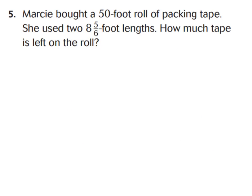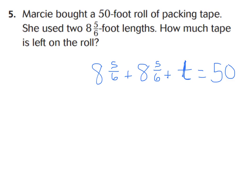Let's look at question number five. It says: Marcy bought a fifty-foot roll of packing tape. She used two lengths of eight and five-sixths feet each. How much tape is left on the roll? Let's write our equation: eight and five-sixths plus eight and five-sixths plus T (for tape remaining) equals fifty. I'll add the two known values together and then work backwards, subtracting from fifty to find T.